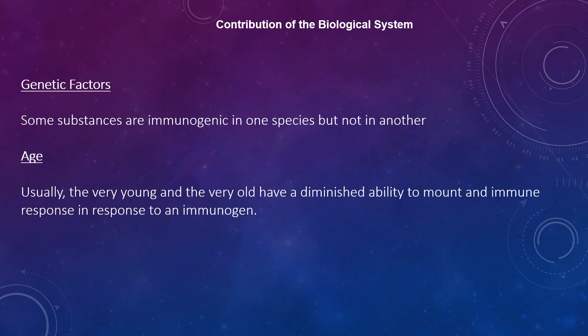The biological system also contributes factors such as genetics and age. With regards to genetic factors, some substances are immunogenic in one species but not in another. Similarly, substances can be immunogenic in one individual but not another — termed responders and non-responders. A species or individual may lack or have altered genes that code for receptors for the antigen on B-cells and T-cells, or may not have the appropriate genes needed for antigen-presenting cells to present antigen to T-helper cells.